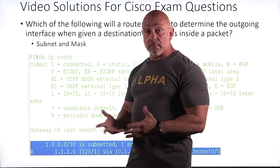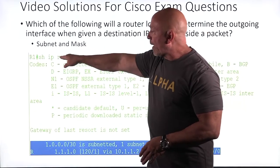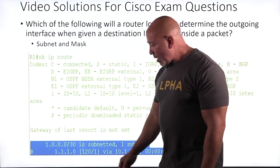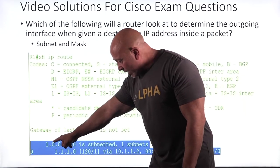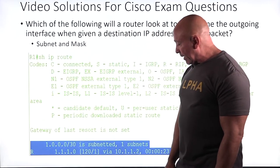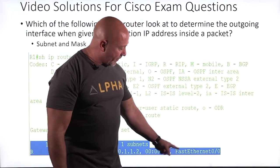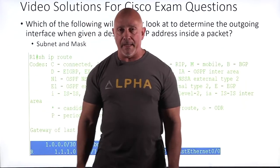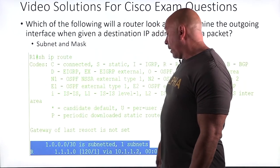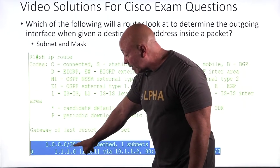The answer: it looks at the subnet and the mask. With 'show ip route,' you can see the destination network and the mask highlighted here in blue. Not only that, it's going to tell you the interface that the packet is going to go out on. So it gives you all that, but these are the two key things it looks at.